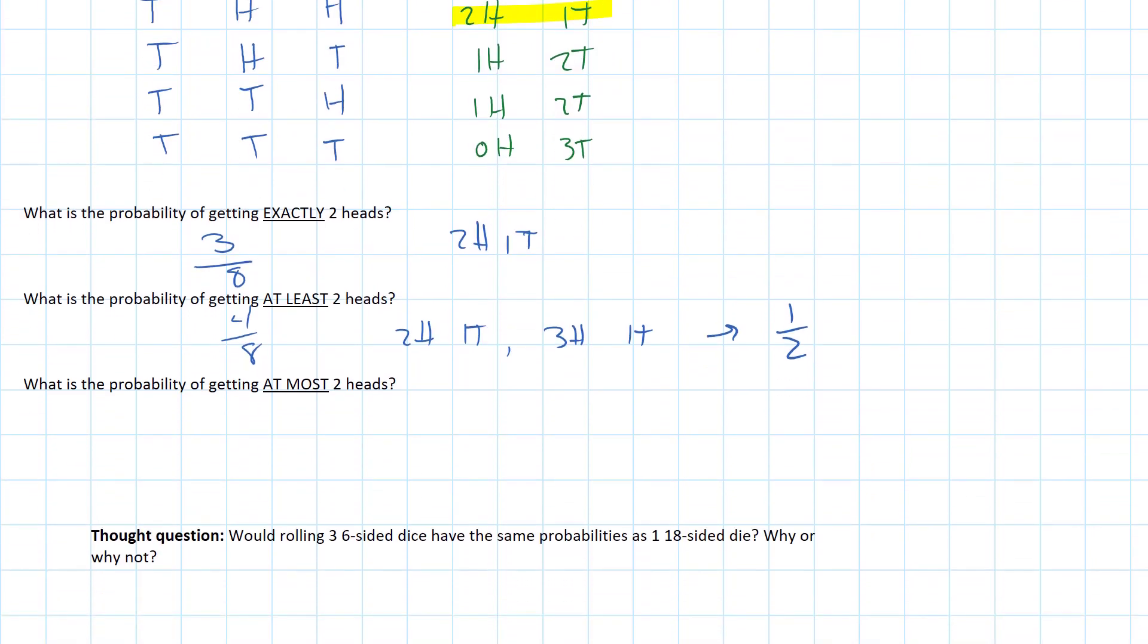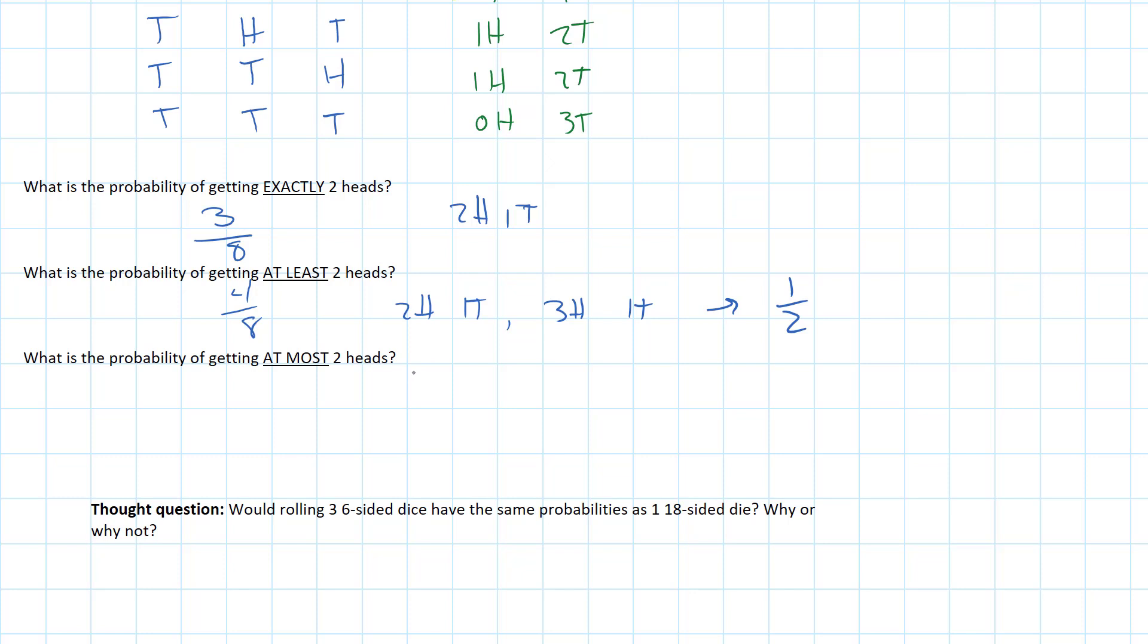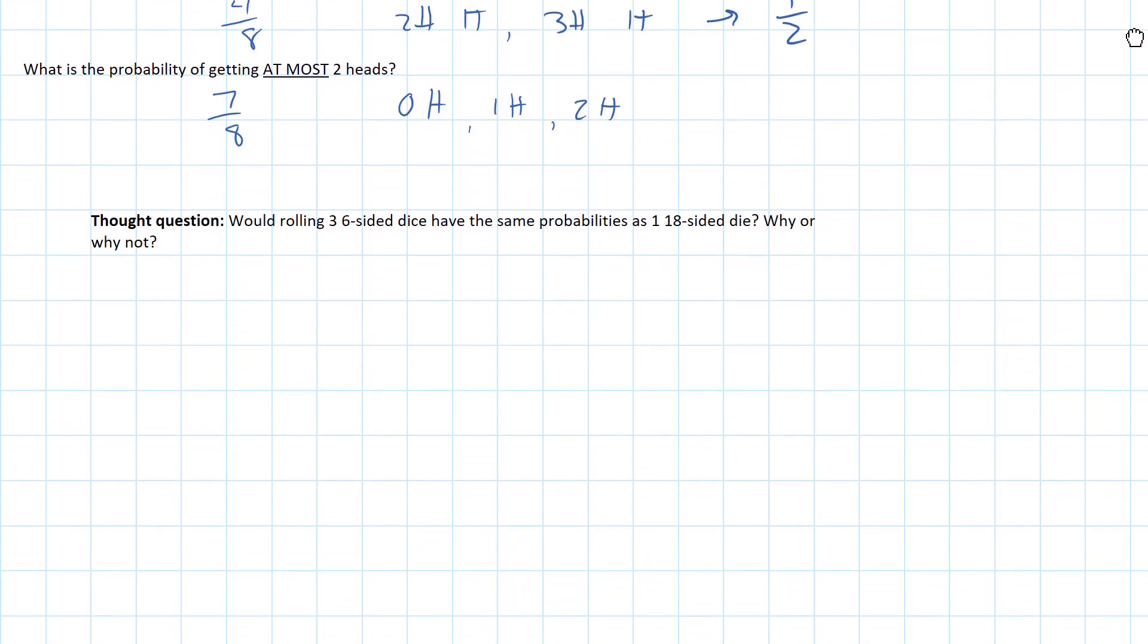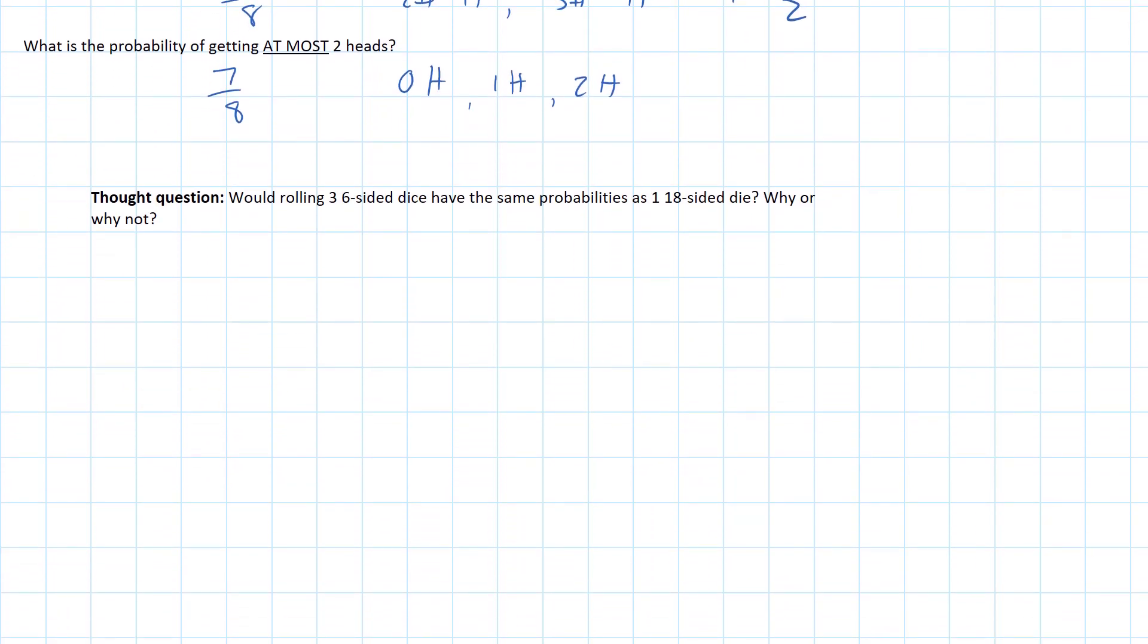So what's the probability of getting at most two heads? Okay. Think about this. I can say at most two heads. So zero heads works. One head works. And two heads also works. At most two heads. So going through my list, I have zero, one, two, and two. In fact, that's most of them, isn't it? So I count seven out of the eight possibilities.